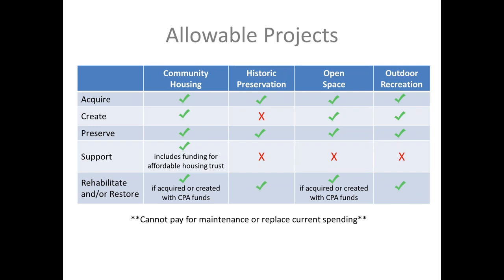In the open space category, we can acquire new open spaces, as well as in the outdoor recreation category. The difference between the two is that open space is mostly about wild lands, while recreation lands include playgrounds and community gardens. We can create recreation land and open spaces, and preserve and rehabilitate if acquired or created with CPA funds. Importantly, CPA funds cannot be used for maintenance or to replace current spending.